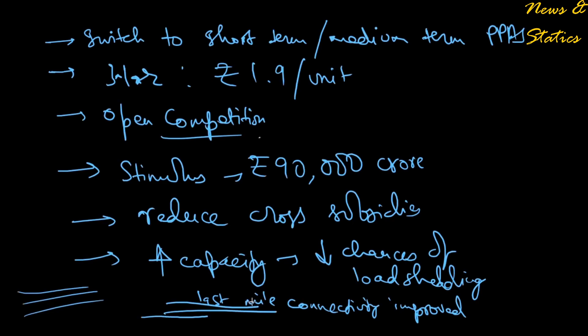AT&C losses have to be reduced, no doubt. If all these suggestions are adopted, it's probably better than just symptomatically treating the DISCOMs by converting their debts into bonds. You better have structural reforms which will make these DISCOMs more competitive, sustainable, and workable. This is all for now. To get more such videos, subscribe to News and Statics. Until next time, bye.